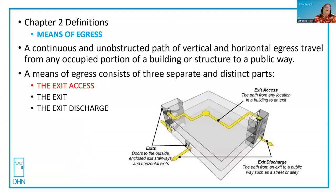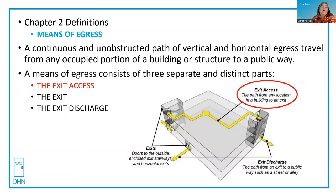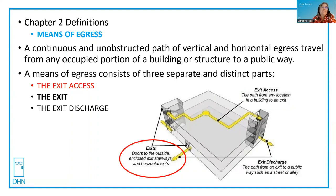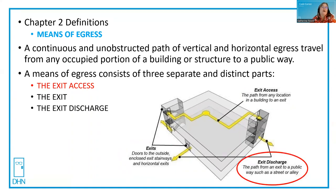In a previous episode, we talked about means of egress and the definition. It's a continuous and unobstructed path of both vertical and horizontal egress travel from any occupied portion of a building or structure to a public way. It consists of three separate distinct parts — the exit access, which is that portion of a means of egress that leads to an exit. It sounds simple, but let's take a deeper look at how that affects hardware, because the egress side isn't always the egress side.